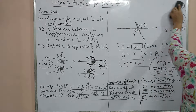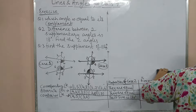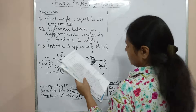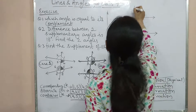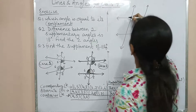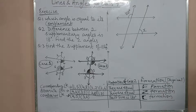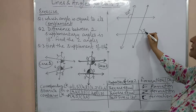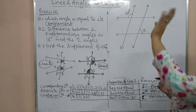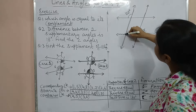Let us do one more sum. We have two pairs of parallel lines and a transversal. The given angle is 110 degrees and we need to find X. There is no direct connection between the given angle and X, so we need an intermediate step.